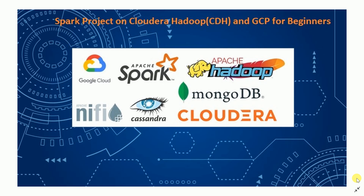On Google Cloud Platform you can actually enable a free trial account, which gives you a $300 USD free trial. You can use that credit within 12 months, and you can use many services from GCP to create a real-time Spark and Cloudera environment to build this project.